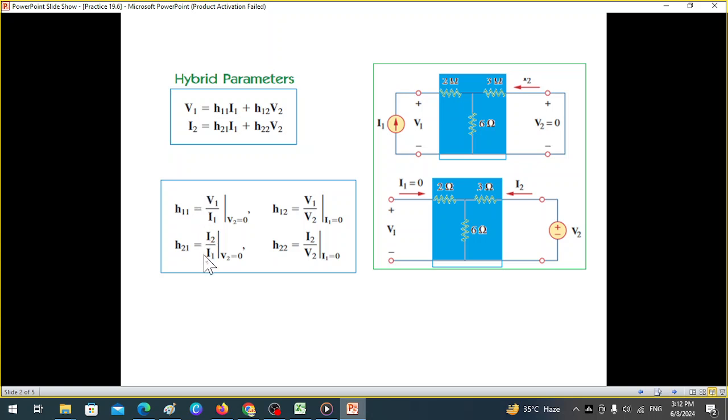From this circuit, we calculated these two parameters. And similarly for the other two, H12, I1 has to be 0. To make I1 zero, we have to keep this as an open circuit so no current flows, and the two parameters we calculate from here: H12 and H22.